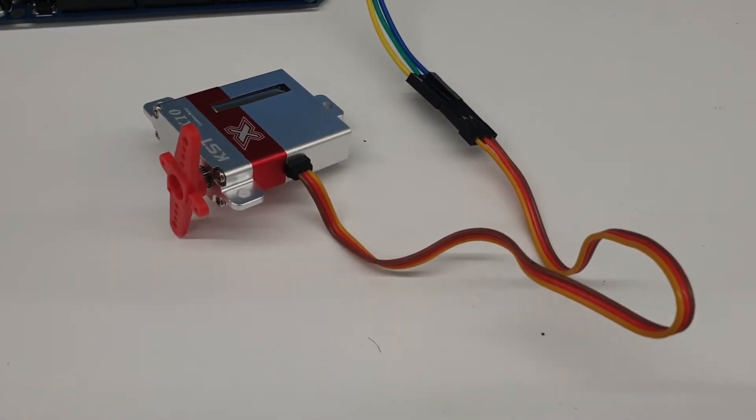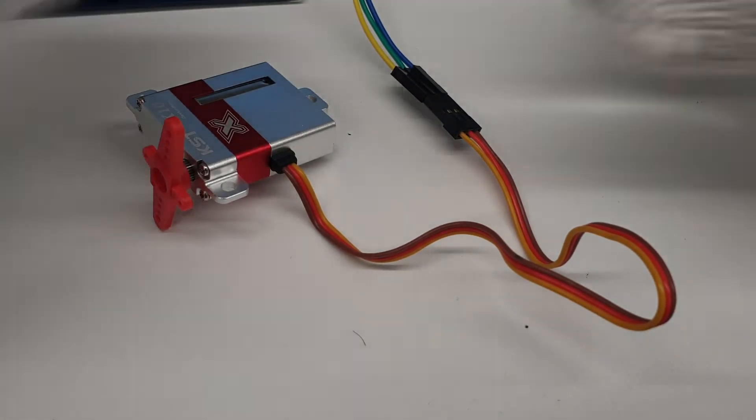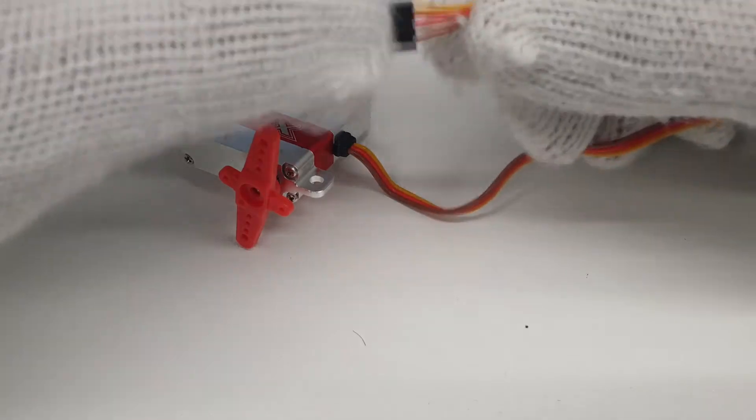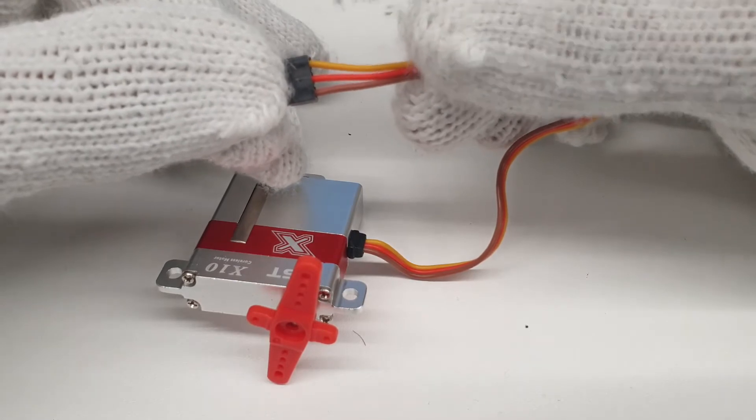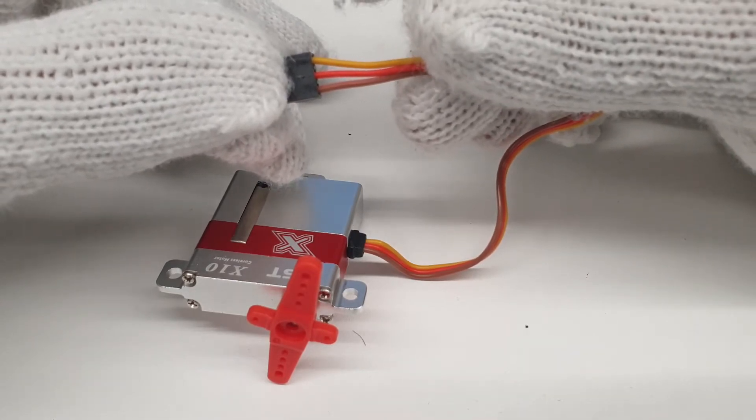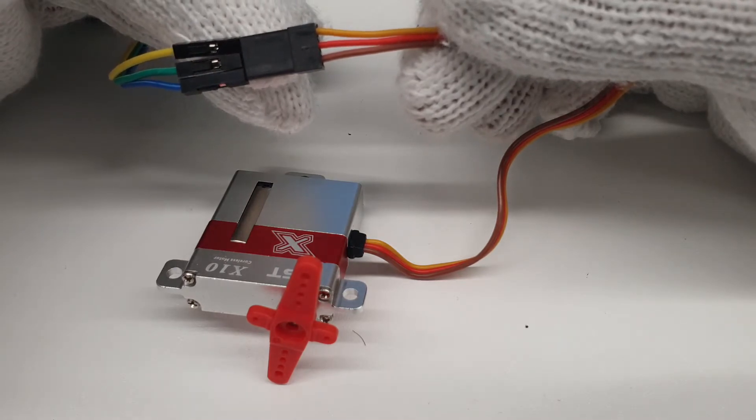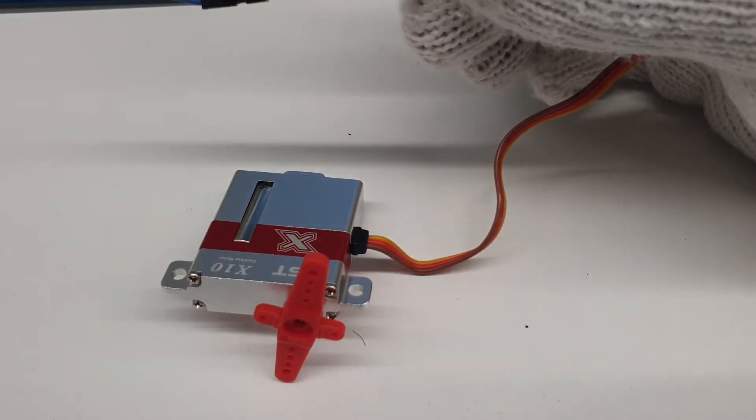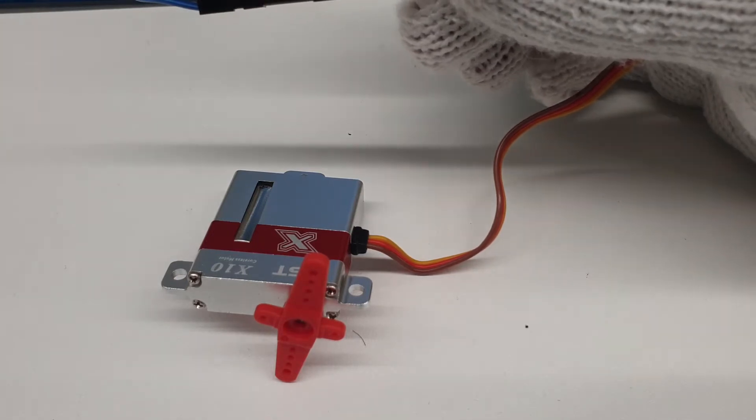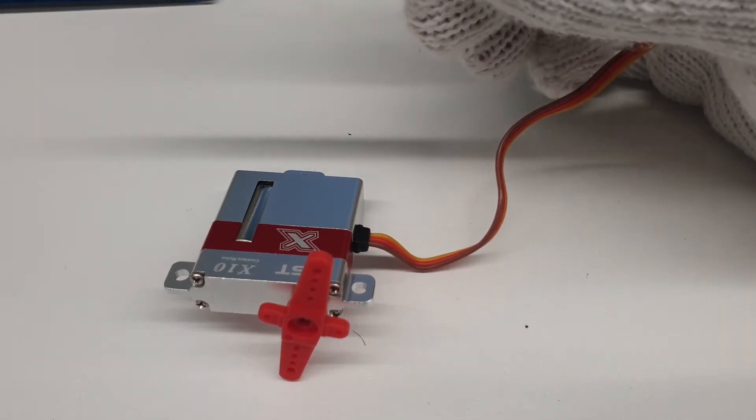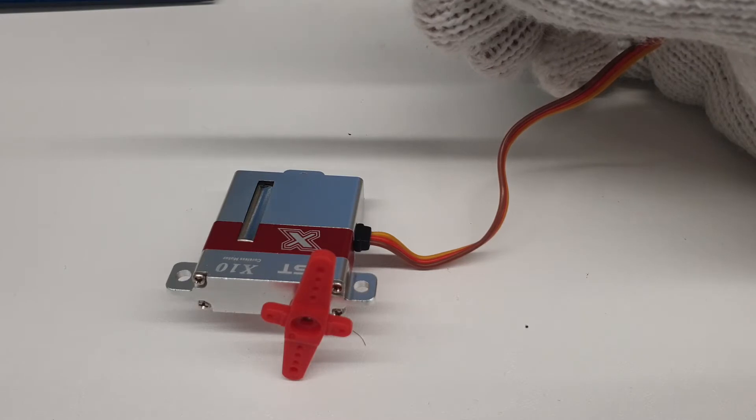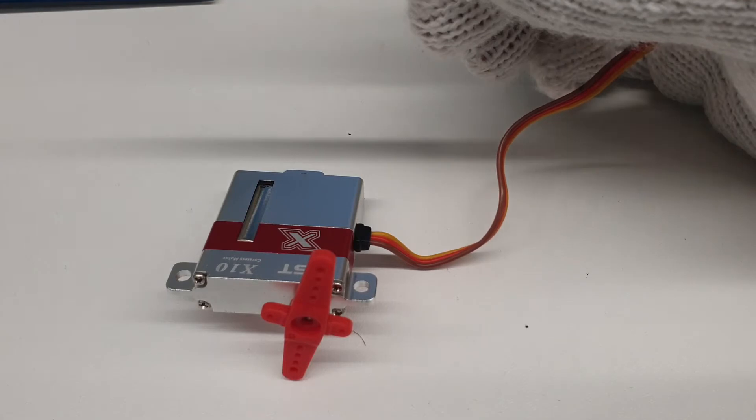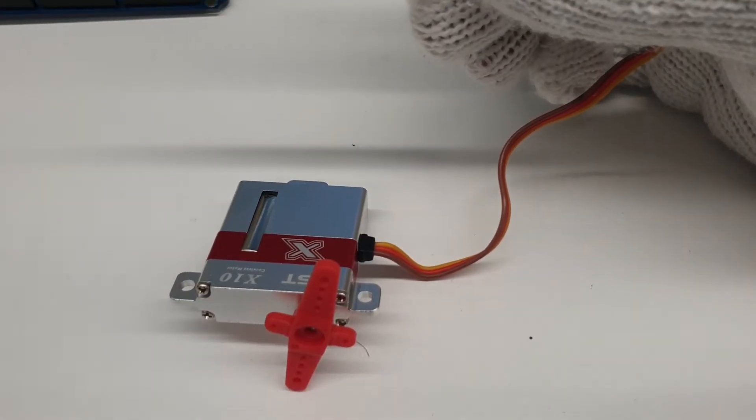So I made all the connections and this servo also follows the same wiring as the rest of those in the market. So the brown one is the ground, red one is the voltage pin, the input voltage and the yellow one is the signal pin. So the signal pin accepts the waveforms from like 1000 microseconds to 2000 microseconds. So you will be using the servo write microseconds function from the Arduino library to operate this servo.